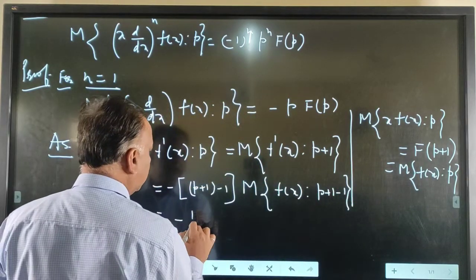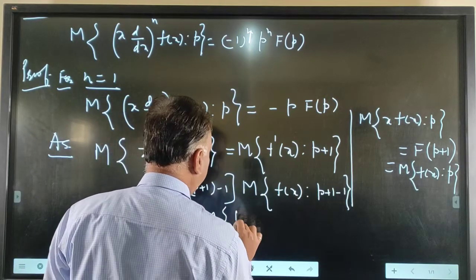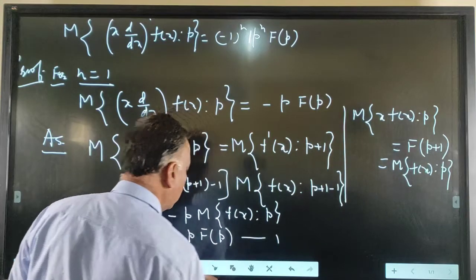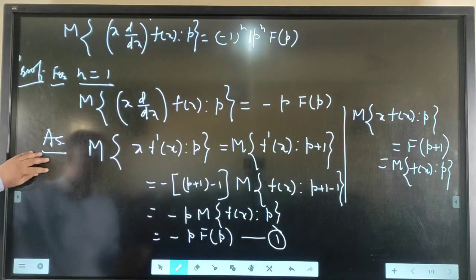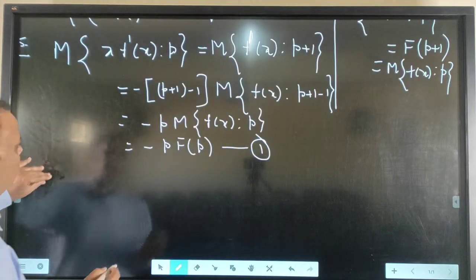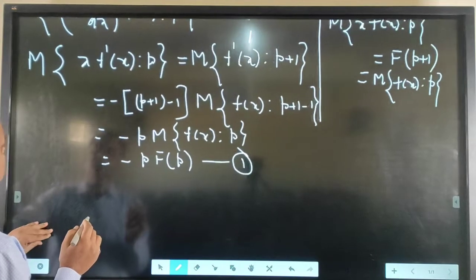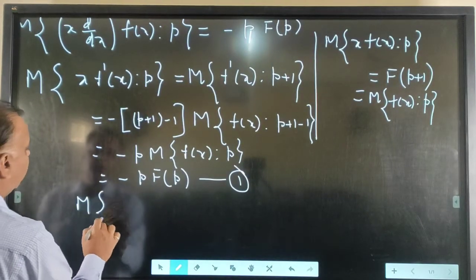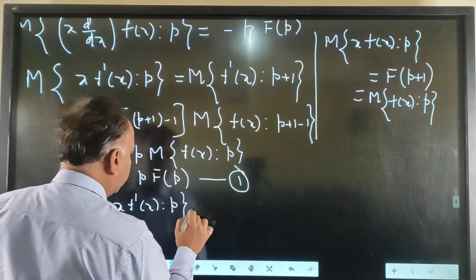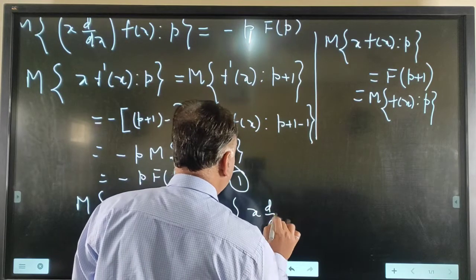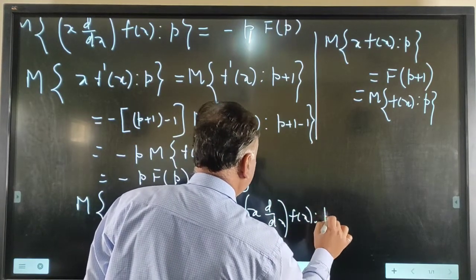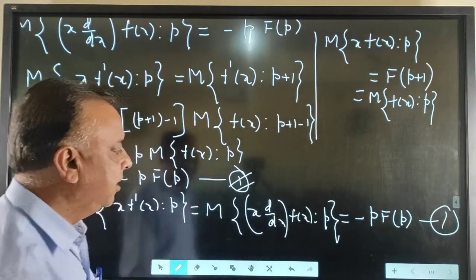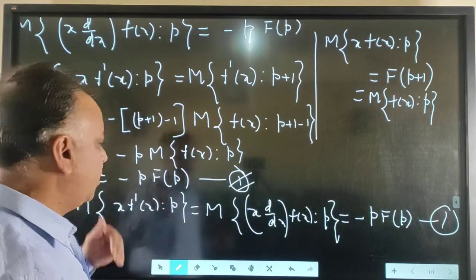So this is equal to minus p times F(p). We have proved the result that the Mellin Transform of x f'(x) with respect to p, which can be written as the Mellin Transform of (x d/dx) f(x) with respect to parameter p, equals minus p times F(p). This is result number 1, and the result is true for n equal to 1.